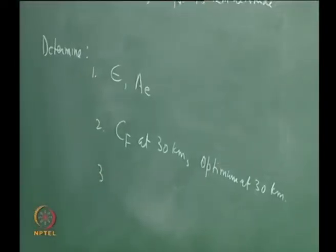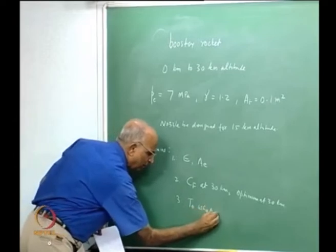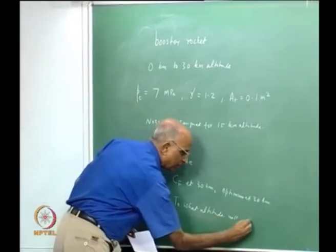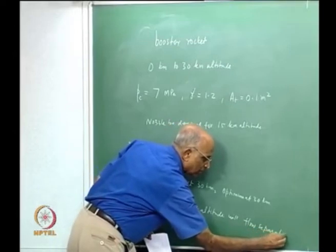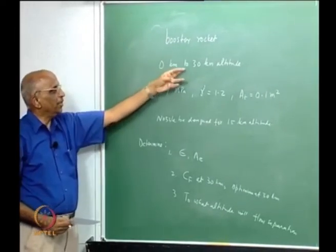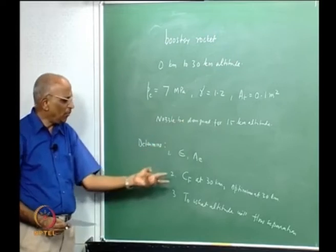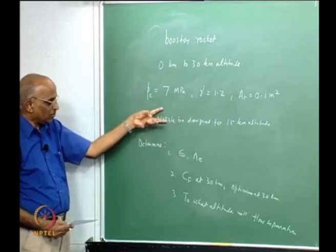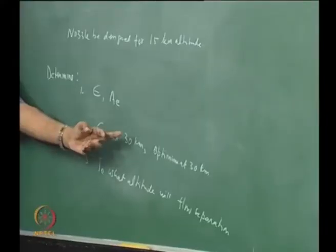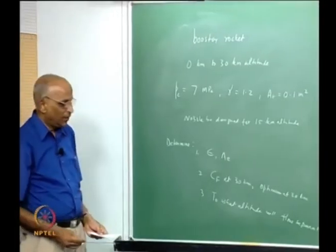Third, we want to know until what altitude flow separation occurs. In other words, we assume it is a conical nozzle designed for 16 km altitude flying from 0 to 30 km. We want the area ratio, exit area, C_f at 30 km, optimum C_f at 30 km, and the altitude up to which flow separation takes place in this conical nozzle.